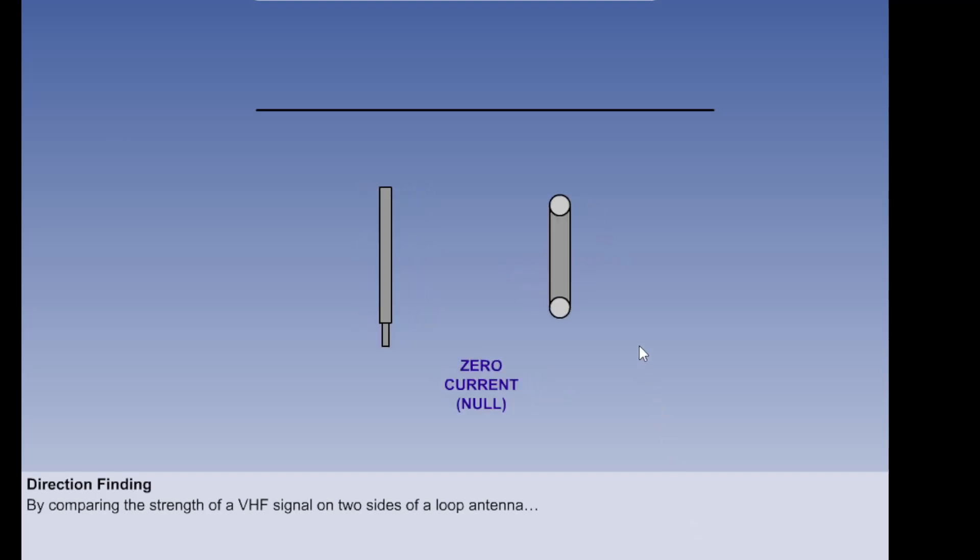We saw in the lesson on antennae that a loop antenna is used to detect the direction from which a signal is transmitting. It does this by comparing the strength of signal on the two sides of the antenna. Where there is no difference in strength, the signal is either 90 degrees in front or 90 degrees behind the antenna.